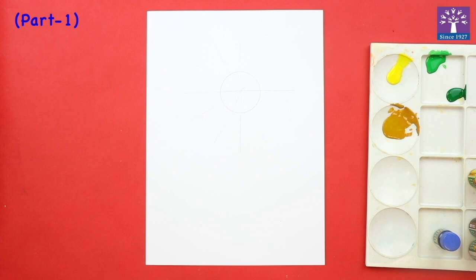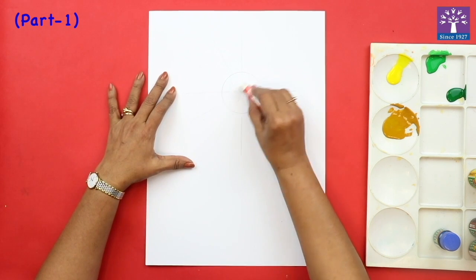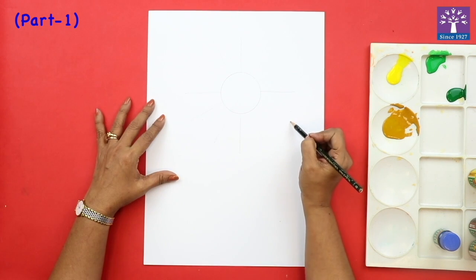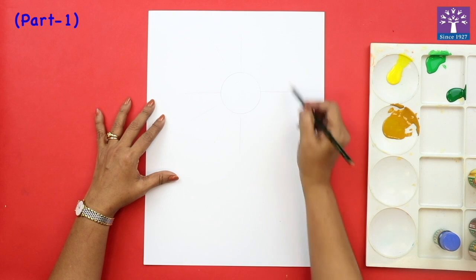That is going to make 12 petals. We will erase these lines from the center. So now it makes sense. We are going to draw petals around the circle.